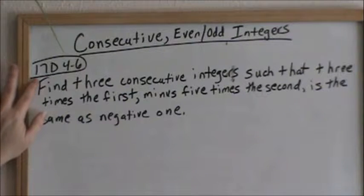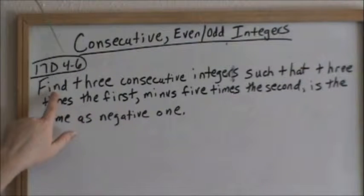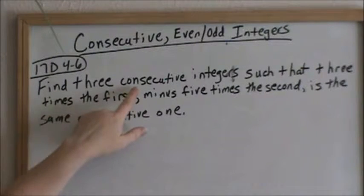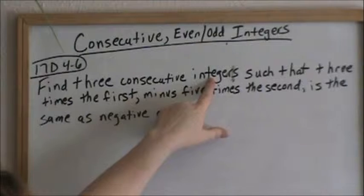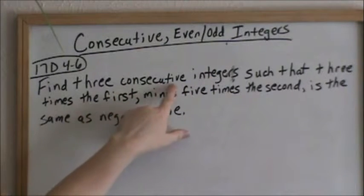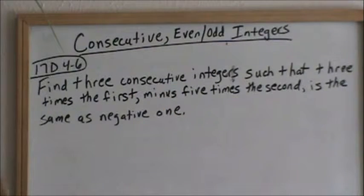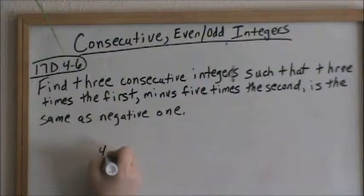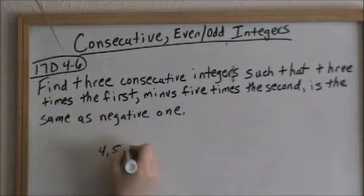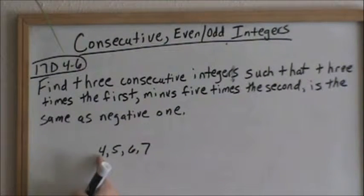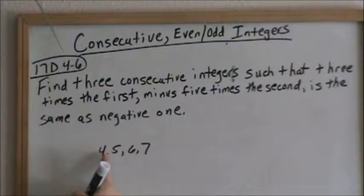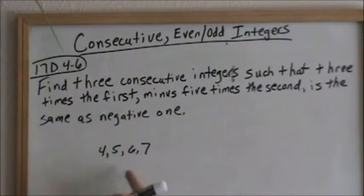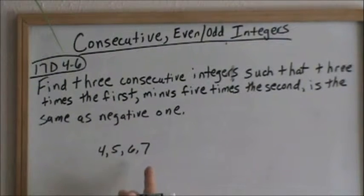Looking at 17D, problems 4 through 6: find three consecutive integers. Consecutive means one after the other. So if I was counting numbers — 4, 5, 6, 7 — those are consecutive numbers. We get to the next one by adding one. So you add one every time.